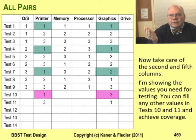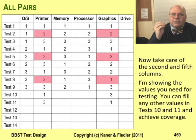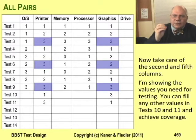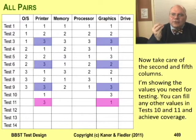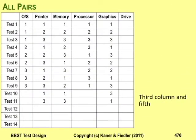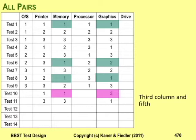There are pairs for two with one, two, and three — those are fine. But for three, we've got pairs with three and three, three and two, but not three and one. For printer three and graphics one, I need test 11. Now check memory against graphics: there's a one with a one, a one with a two, but no one with a three. It's easy to fit that pair into row 10.